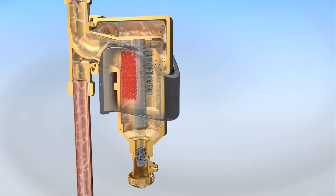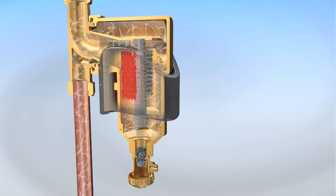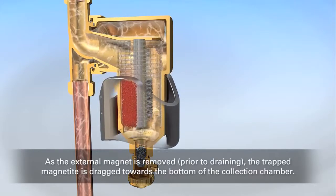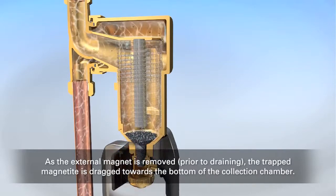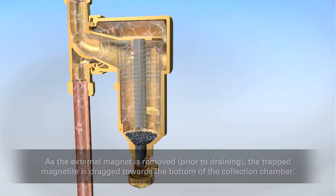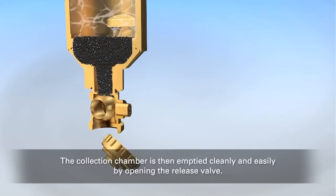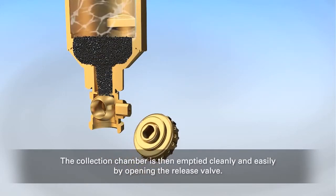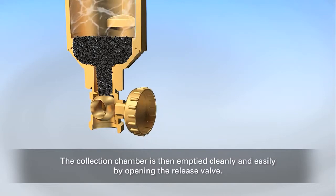Prior to draining the SpiroTrap MB3, the magnet should be slid down and off the unit. This action drags the collected magnetite to the bottom of the collection chamber. The collection chamber can then be emptied cleanly and easily by opening the release valve.